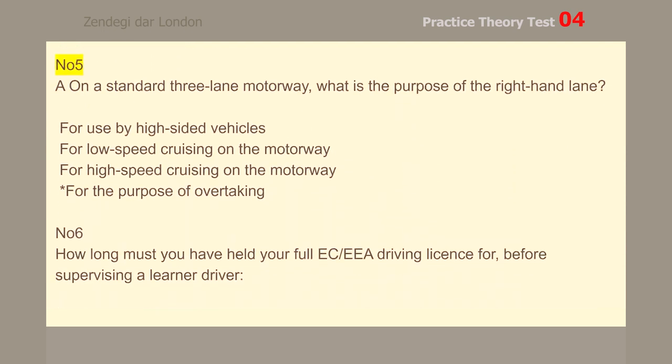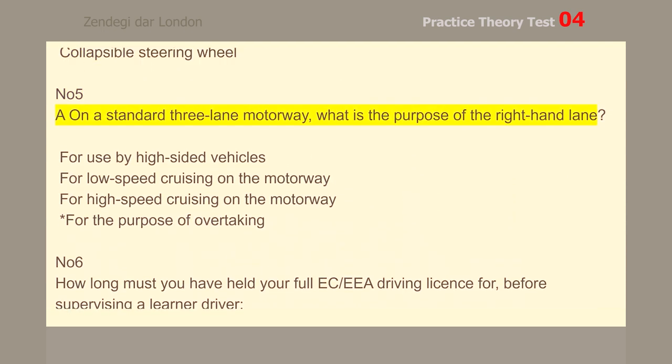Number 5. You are on a standard 3-lane motorway. What is the purpose of the right-hand lane? For the purpose of overtaking.